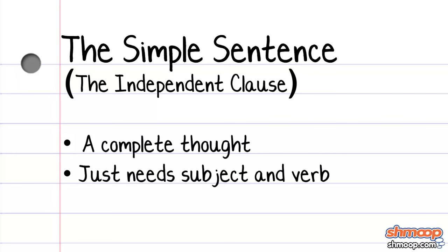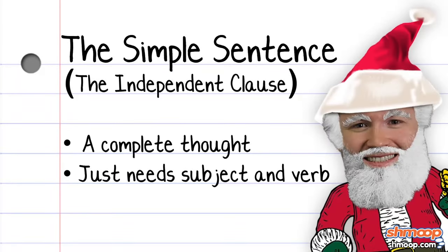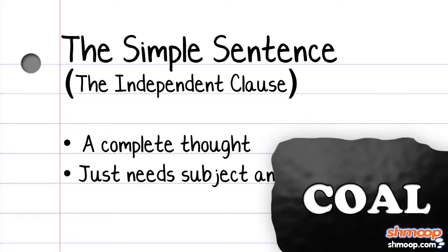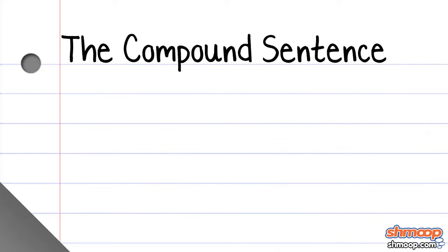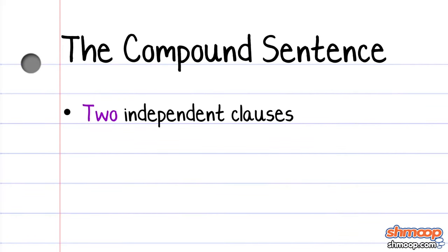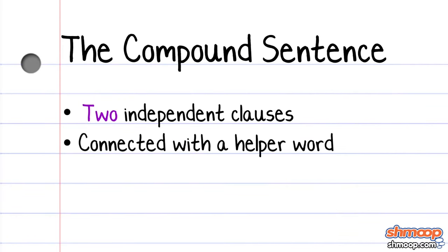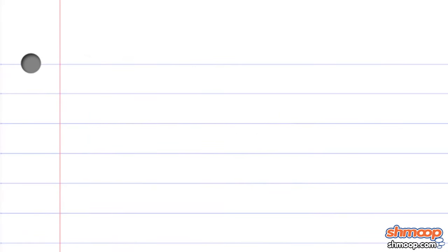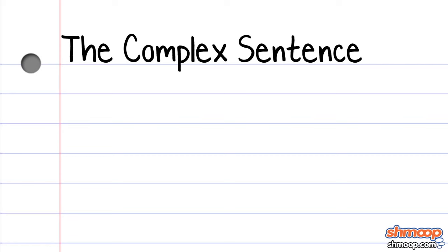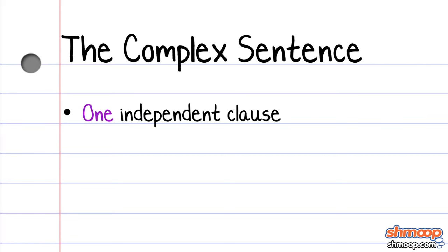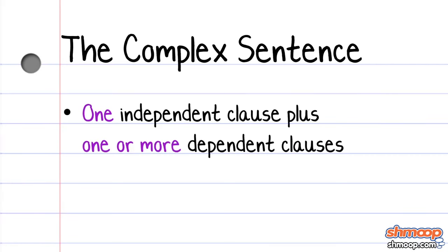The other two types use different helper words to connect clauses. Compound sentences have two independent clauses connected with a helper word, such as and, nor, or so. And finally, complex sentences really live up to their name — they have an independent clause, plus one or more dependent clauses, which can't stand alone as complete thoughts.